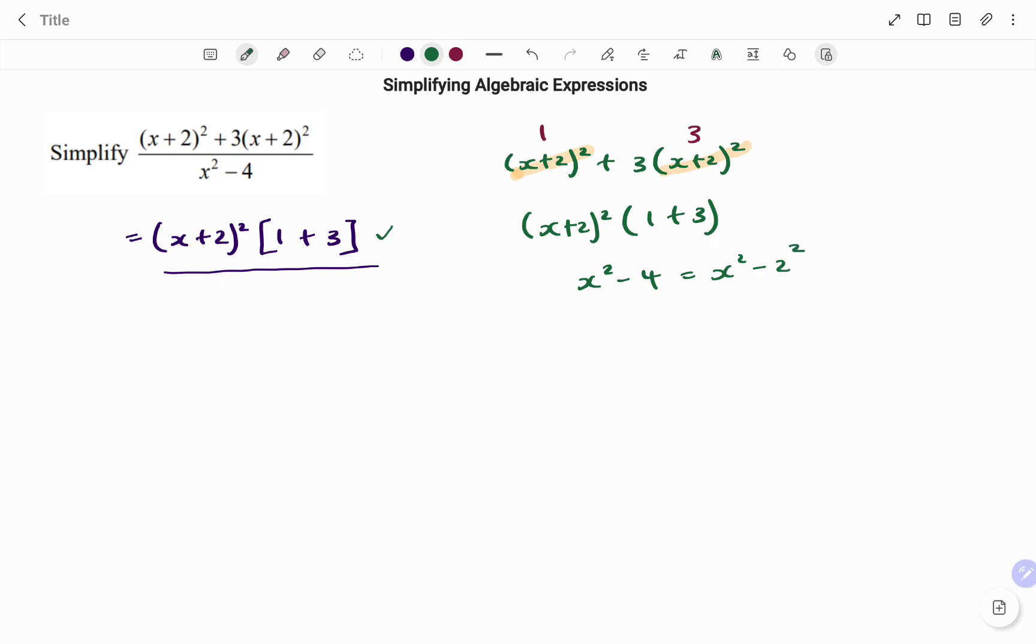The difference of two squares states that a squared minus b squared equals a plus b times a minus b. So what I have here will be x plus 2 times x minus 2.